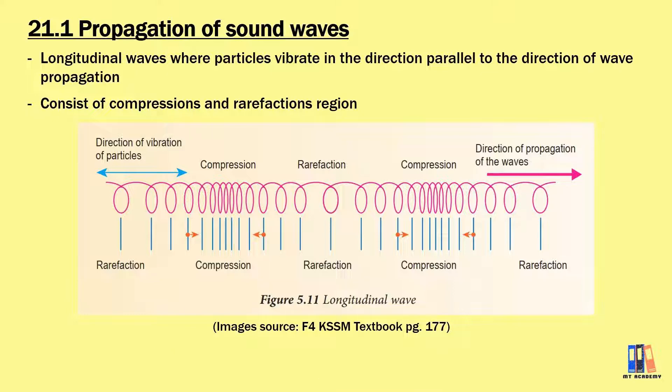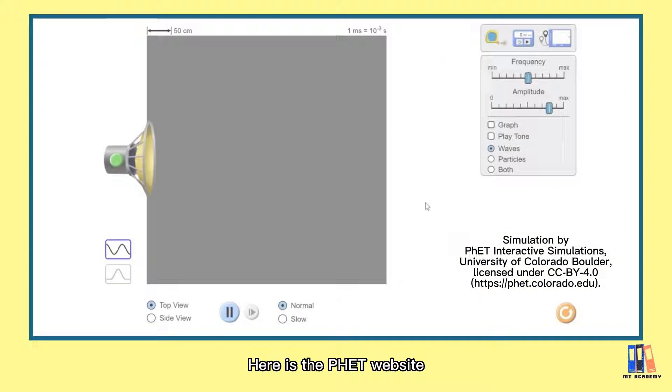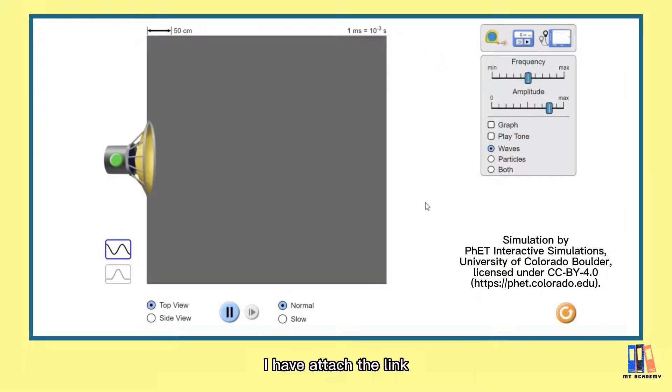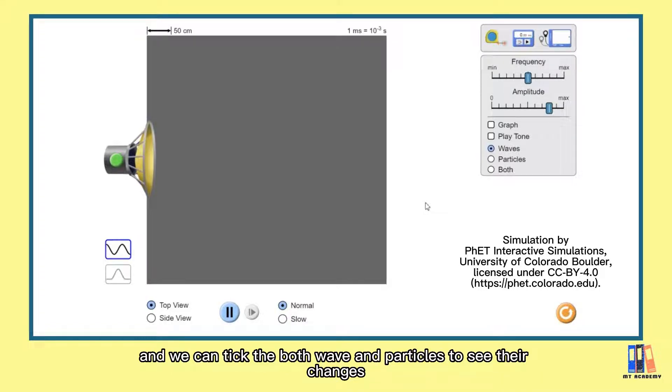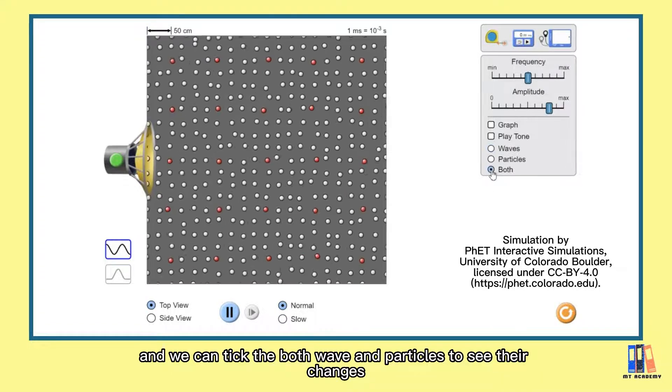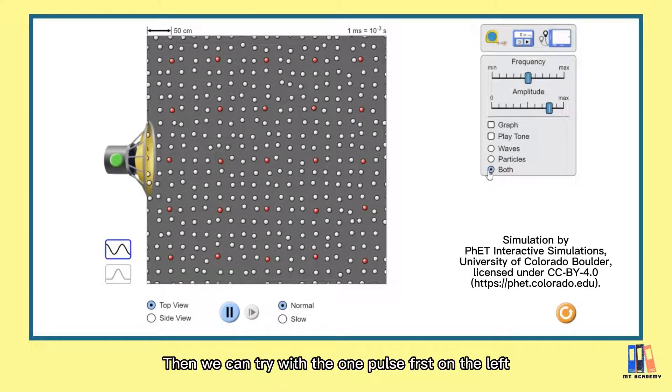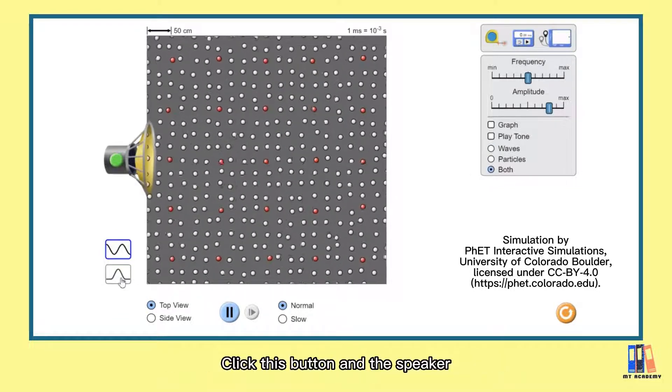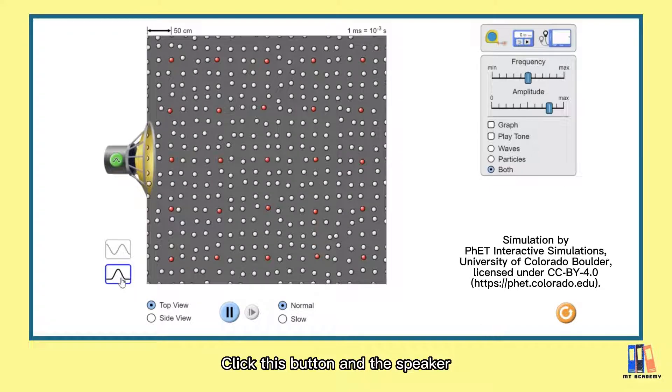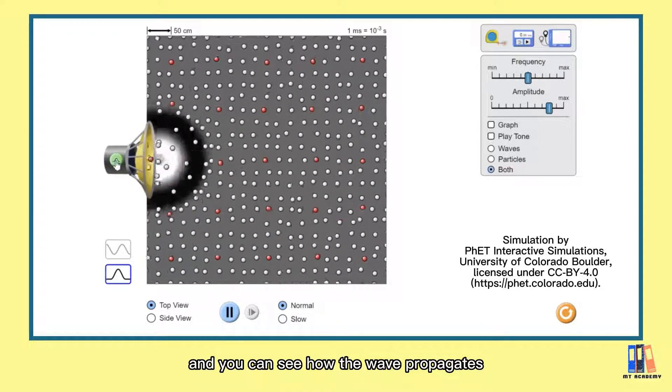Before we move on, let's see the simulation of sound wave. So here is the PHET website. I have attached the link in the description below if you're interested to try it. First, we can look at the right and we can tick the both wave and particles to see their changes. And then we can try with the one pulse on the left. Click this button and the speaker and you can see how the wave begins.